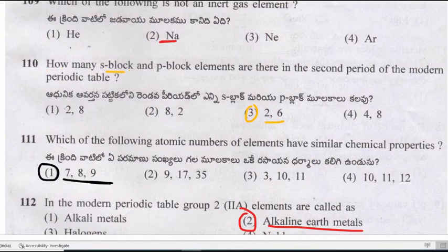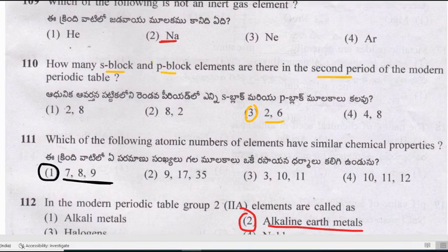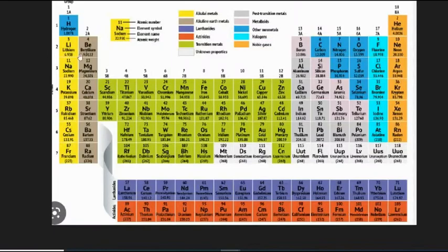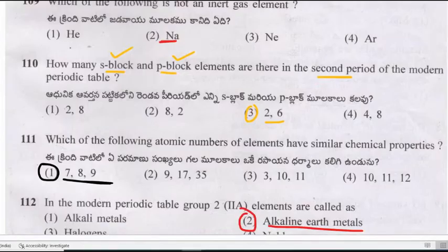Question: How many S block and P block elements are there in the second period? In the second period, there are 2 S block elements and 6 P block elements. So the correct answer is 2 and 6.